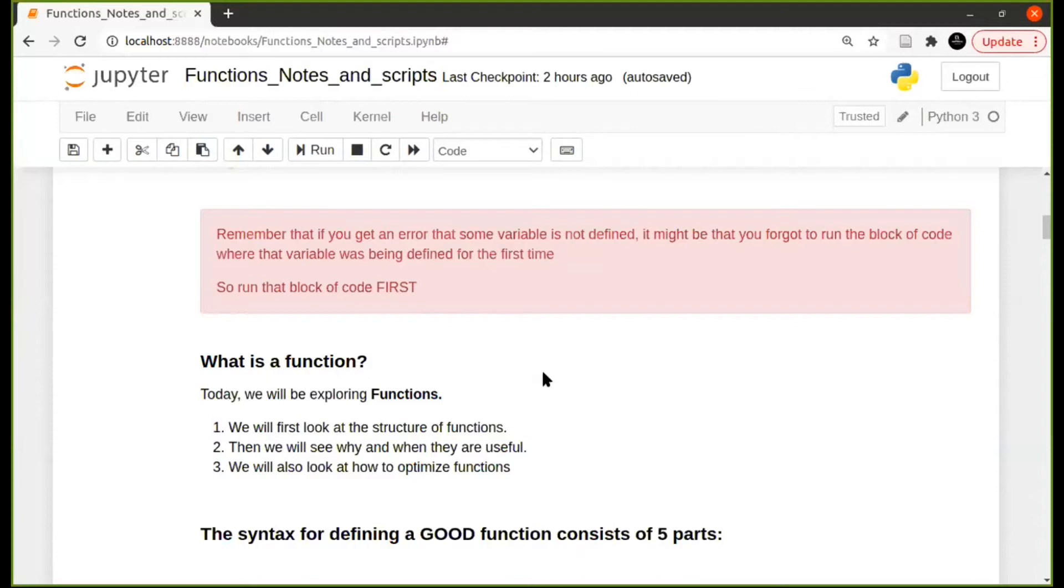And you basically do the same with functions too. As you go along you might see, oh the user might want to also be able to choose this part themselves and that part themselves and then you optimize the function for that. But we'll see some examples later on.